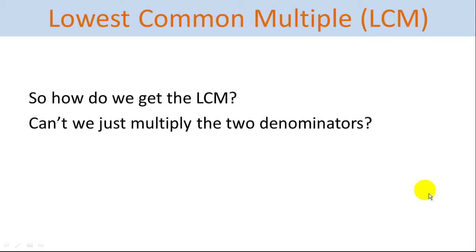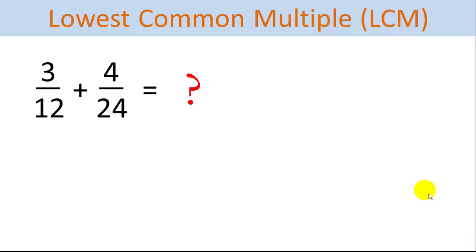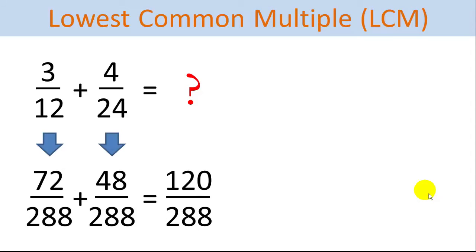So how do we get the lowest common multiple? Can't we just multiply the two denominators? You can get a common multiple by multiplying the two denominators, but it's not the lowest common multiple. And it gets to be a problem if you have large denominators — multiplying them together gives you a much bigger denominator. In this case, 3 twelfths plus 4 twenty-fourths: if we multiplied these denominators together we'd get 288 as a common denominator. But 288 is definitely not the lowest common denominator. When we convert 3 twelfths to 72 over 288 and 4 twenty-fourths to 48 over 288, we add these together and get 120 over 288, which reduces to 5 twelfths.